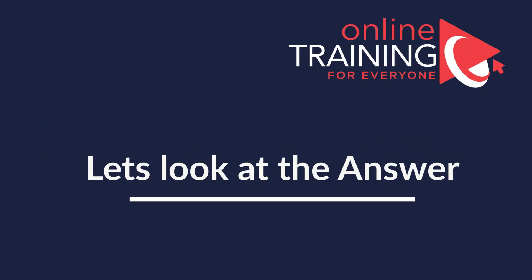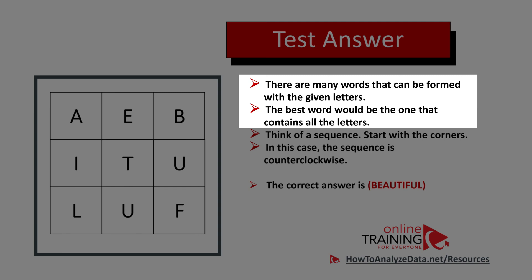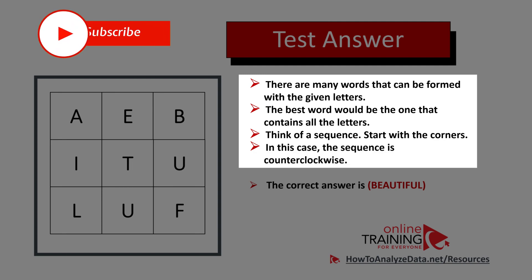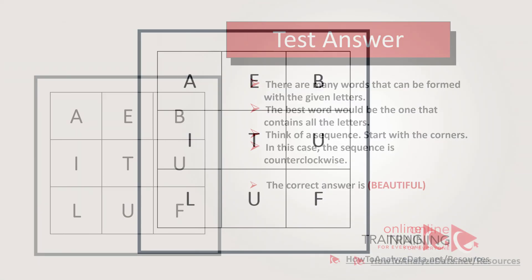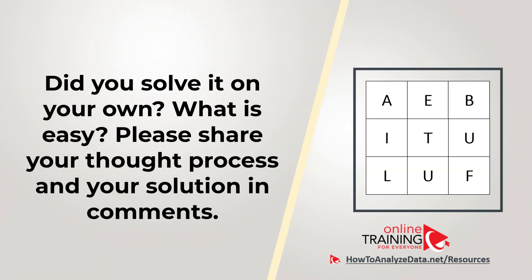There are quite a few words that can be formed, but the best word will use each of the nine letters exactly once. The key insight is to think about the sequence — authors often place letters in reverse order of how we read. Here, the correct answer is 'beautiful,' starting in the upper right corner and reading B, E, A, U, T, I, F, U, L. Hopefully you've nailed this and now know how to answer similar problems on the test.